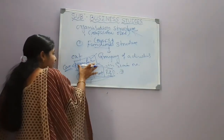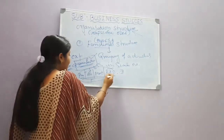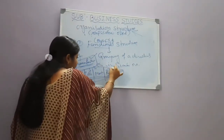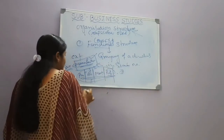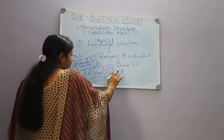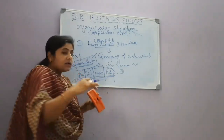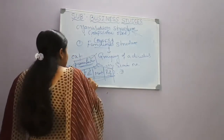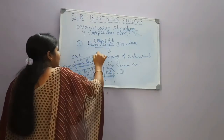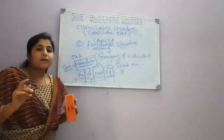The manufacturing activities are divided into separate departments: Purchase Department, Accounts Department, Marketing, and Research and Development. These are the different departments working under the functional structure of organization.